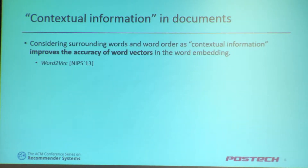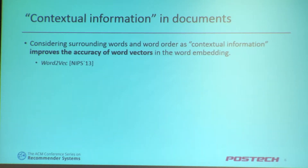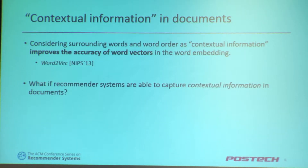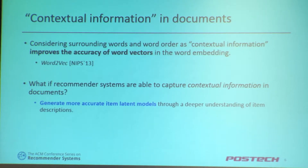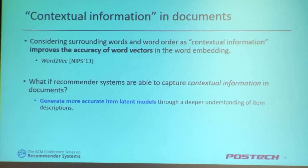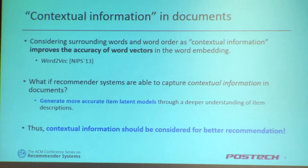In the natural language processing area, considering surrounding words and word order as contextual information improves the accuracy of word vectors in word embedding. So if recommender systems are able to capture contextual information in documents, we can expect more accurate item latent models through deeper understanding of item descriptions. Contextual information should be considered for better recommendation.